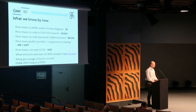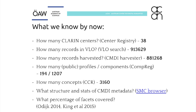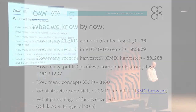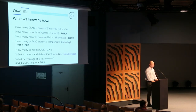We already know some numbers. The number of CMDI records in the VLO is growing nicely — we are somewhere around 900,000 at this time, floating a bit. And we have many different public CMDI profiles as well as many components, which gives quite a complex data space to find your way in.